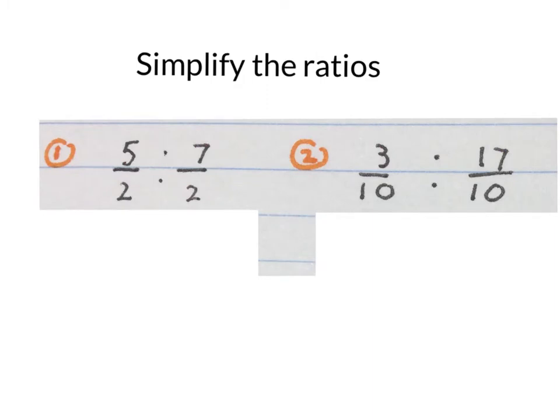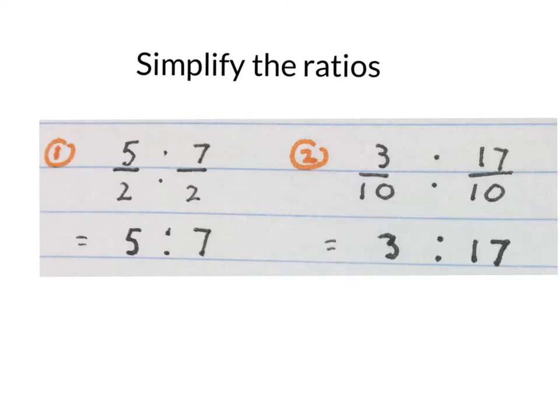The next two sets of ratios involve fractions. If you get a ratio 5 over 2 to 7 over 2 and the denominators are the same, you can just leave out the denominators and the final ratio will be 5 to 7. Same with ratio 3 over 10 to 17 over 10. The denominators are the same, so you have a ratio 3 to 17.